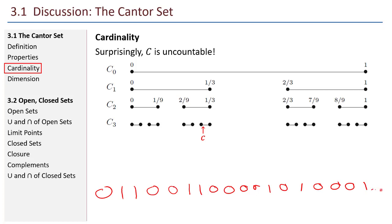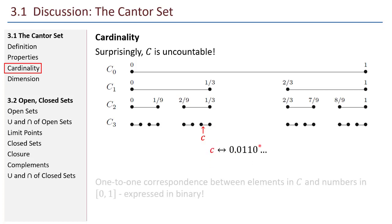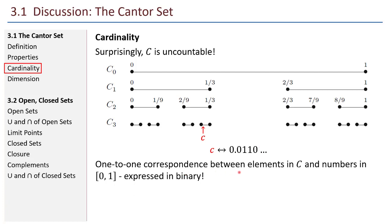That's how the Cantor set works — it goes on forever and never stops. If I put a decimal point right in front, this is a binary representation of some real number. So I have a real number that corresponds to the Cantor number c. The idea is that there's a one-to-one correspondence between elements in the Cantor set and numbers in the closed set from zero to one expressed in binary — a correspondence between an uncountable set and the Cantor set.